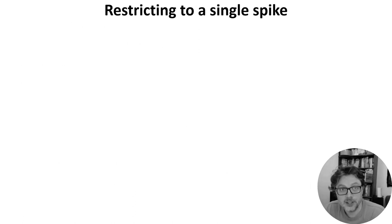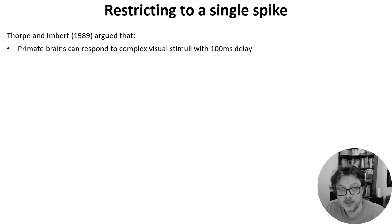The last method we'll look at today is making the network differentiable by limiting each neuron to only be able to fire a single spike. This might seem like a crazy limitation but there's actually a good reason to try this coming from Simon Thorpe and colleagues.